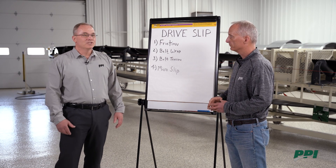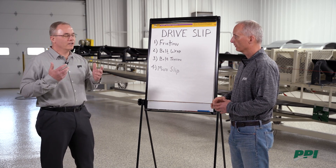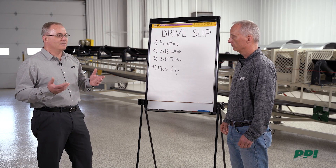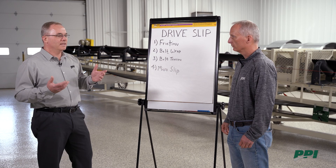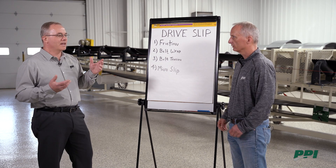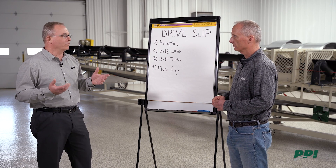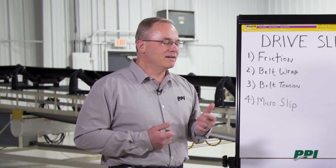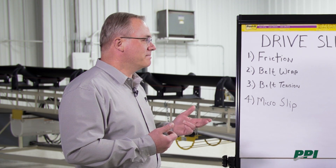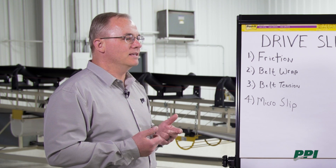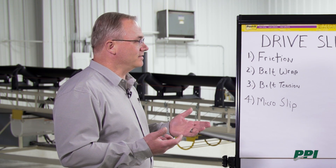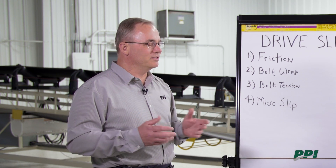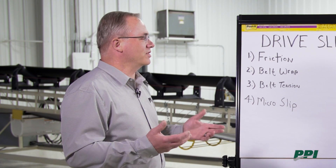So with that Tim, when it comes to drive slippage and the problems that customers experience with this, generally speaking we can categorize drive slippage into three groups: one being friction, the second being belt wrap — the amount of belt wrap around the drive pulley — and the third being belt tension. Let's break it down into those three categories and first talk about friction.